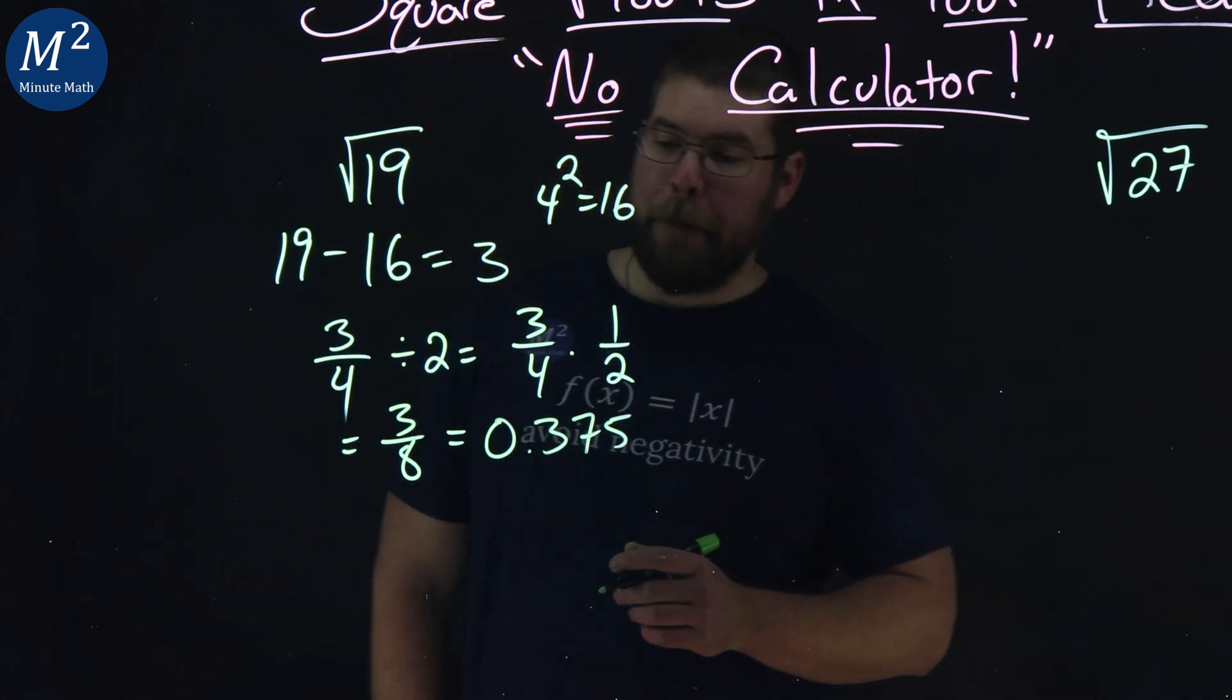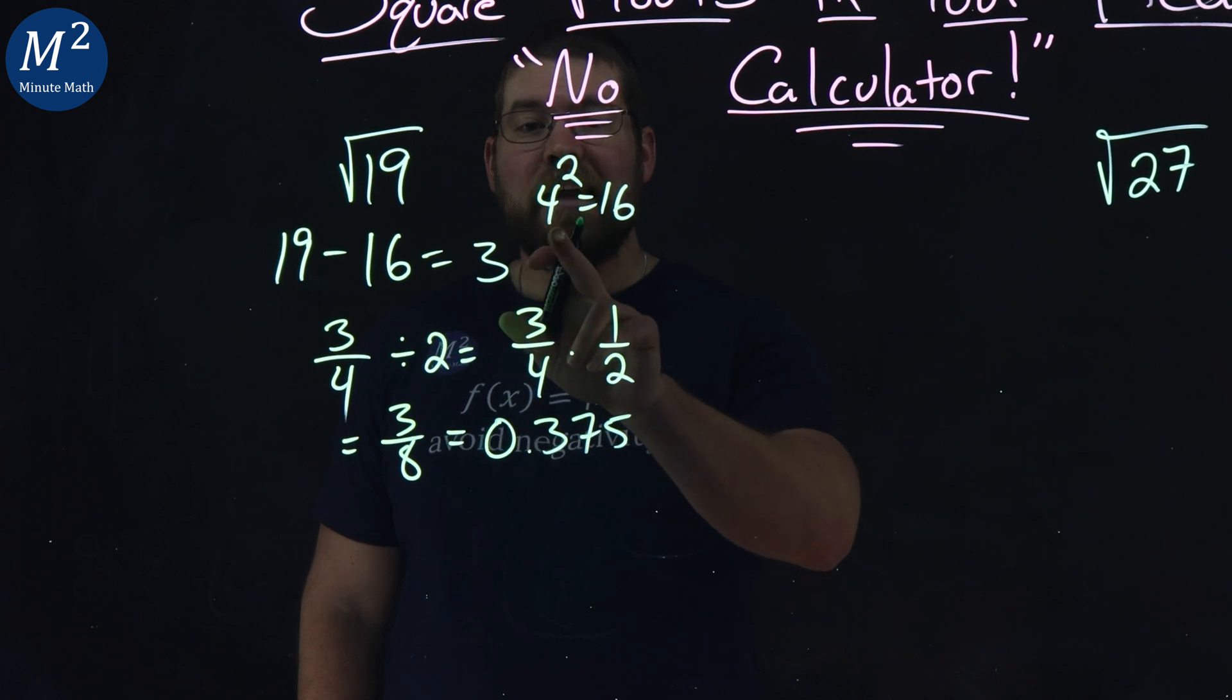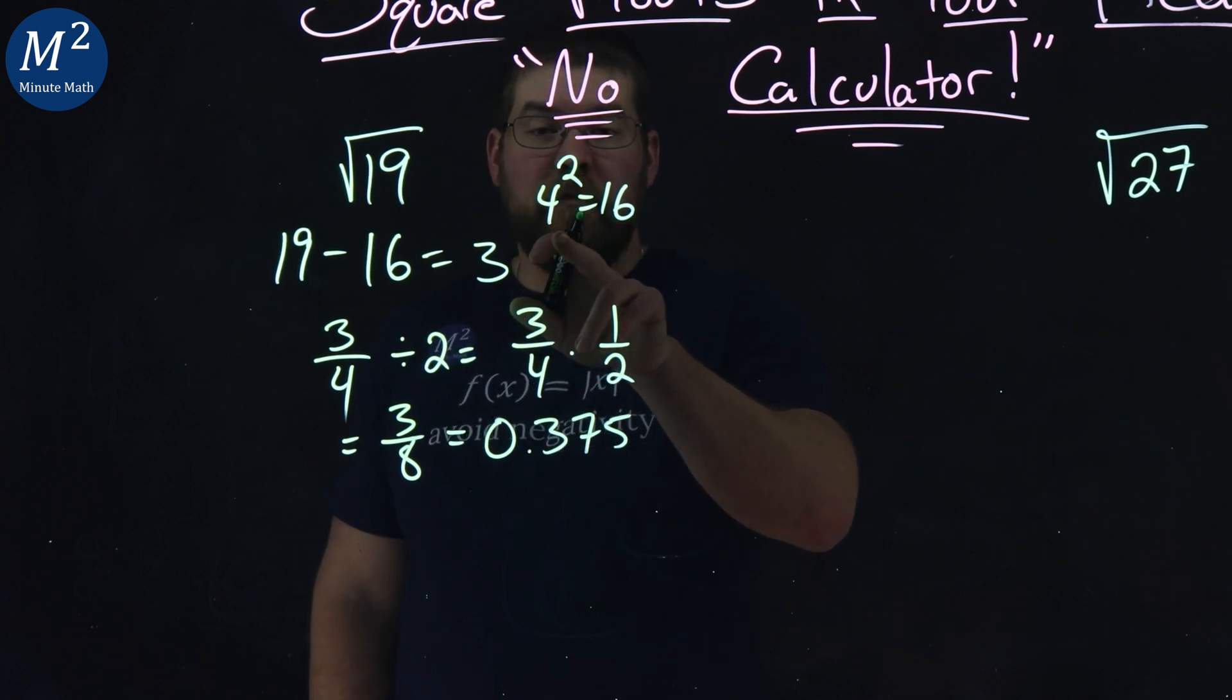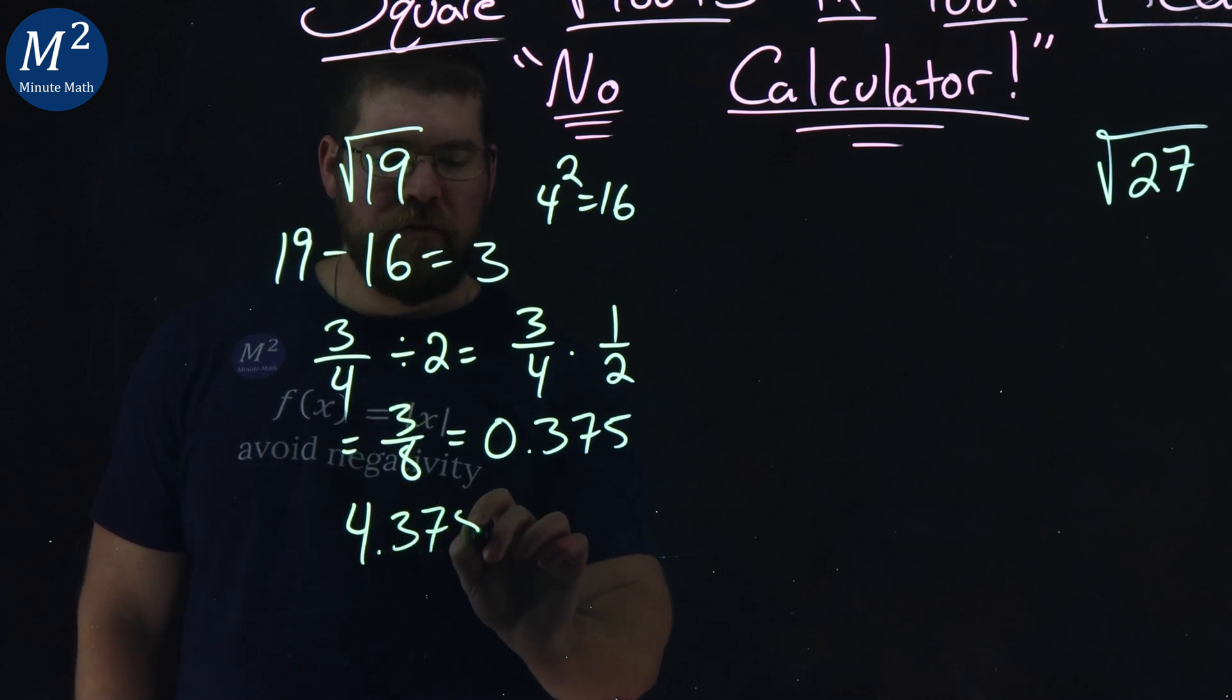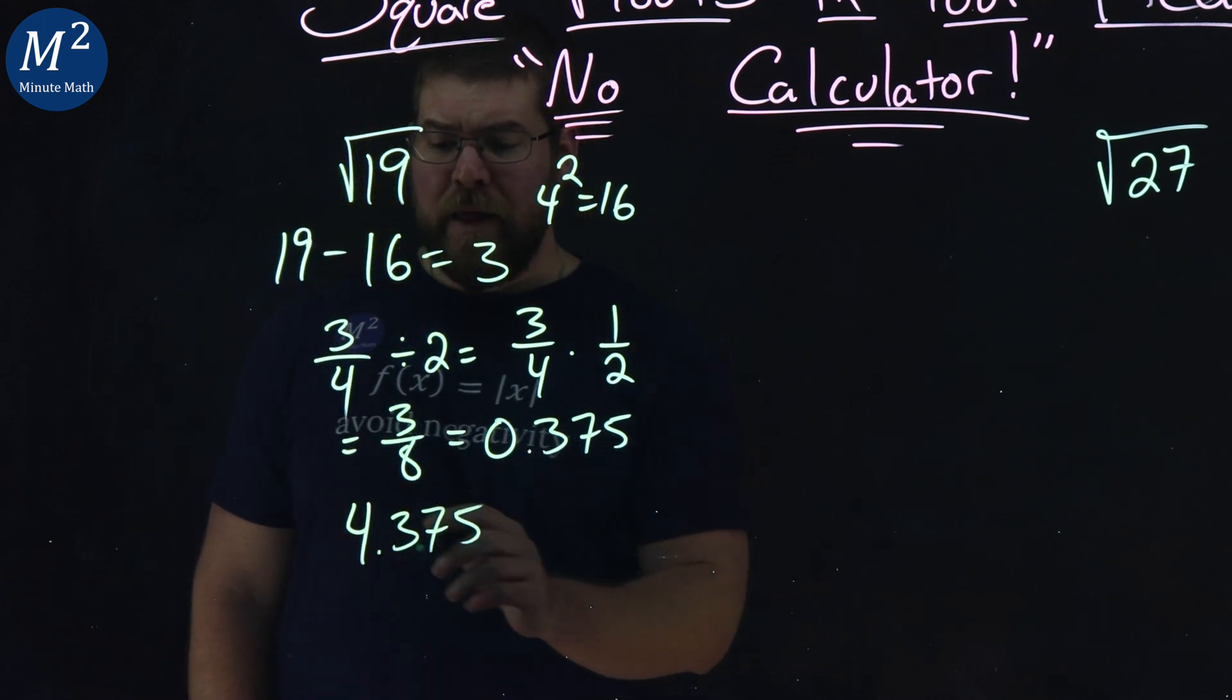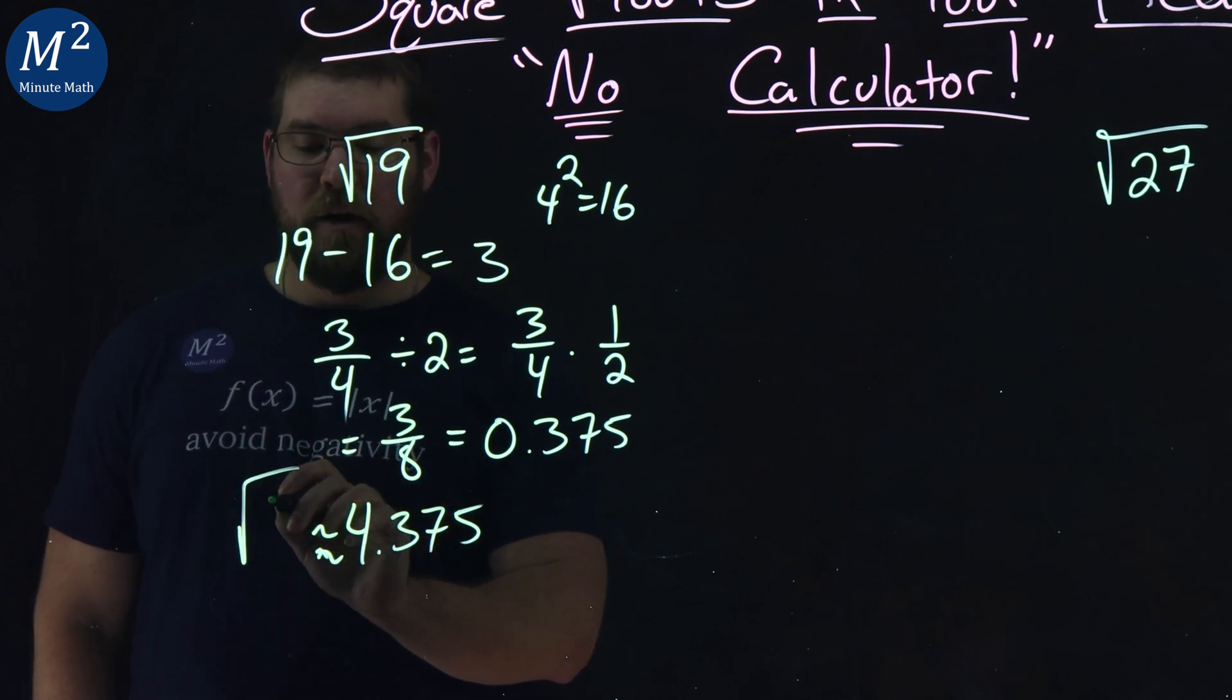We then take that 0.375 and add it to the perfect square of 16, the 4. So we have 4.375, and that's an approximation of the square root of 19.